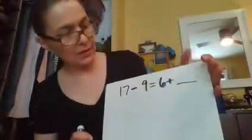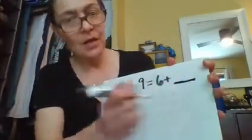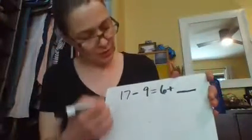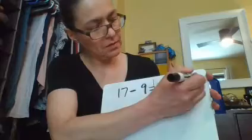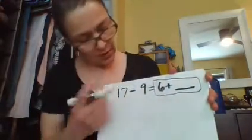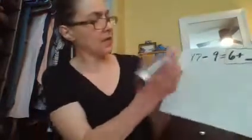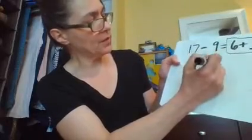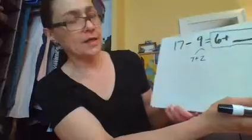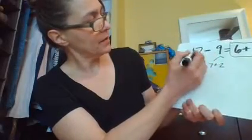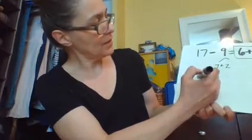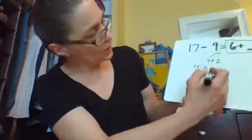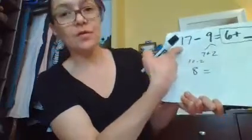And now we're gonna go back to 17 minus 9 equals 6 plus blank. So what you have to do, how you approach this, is you solve the equation first. And you don't think about this yet. Because that's your second step. So you're gonna solve 17 minus 9. And you can break apart numbers here. 7 plus 2 equals 9. So 17 minus 9. 17 minus 7 equals 10. 10 minus 2 equals 8. So 17 minus 9 is 8. So now you have your answer. Step 1.